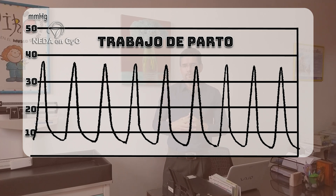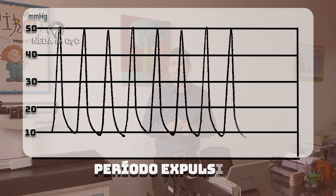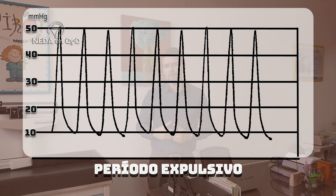According to the characteristics and evolution of labor, there will be an increase in uterine activity — an increase in intensity and frequency — reaching up to 50 mmHg. During the expulsive period, the abdominal muscles will increase intra-abdominal pressure and help with the final expulsion of the fetus.